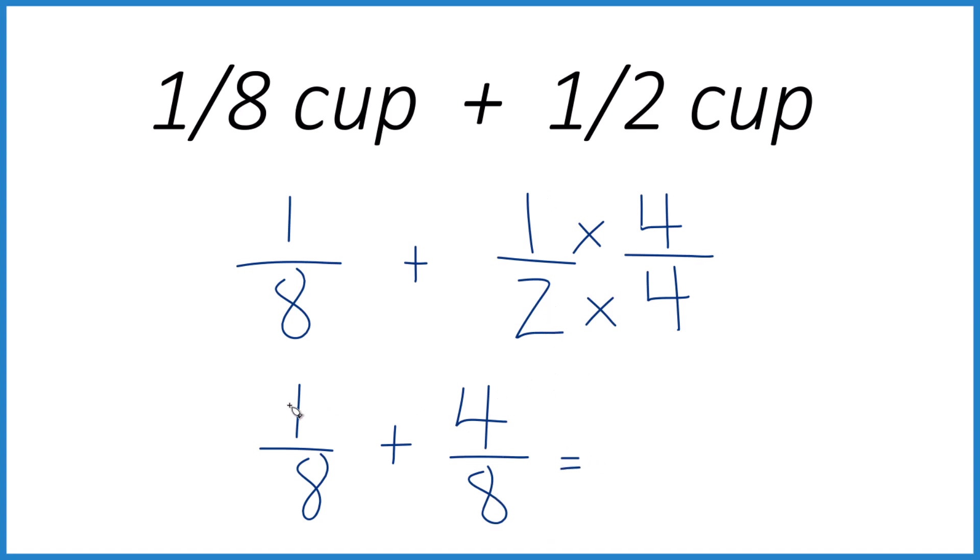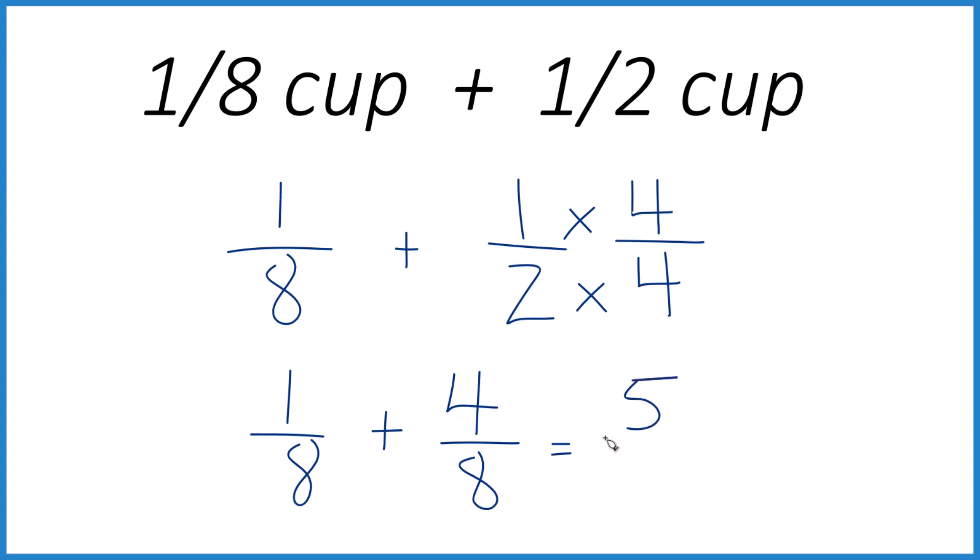Now we just add them together. 1 plus 4, that equals 5. Bring that 8 across, and we have 5 eighths.